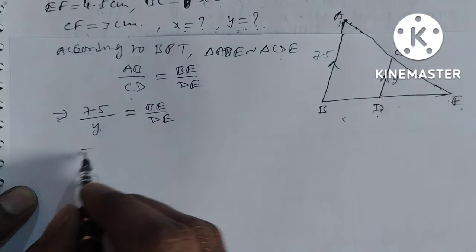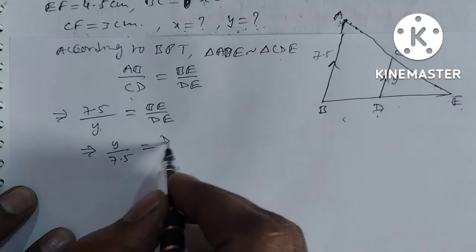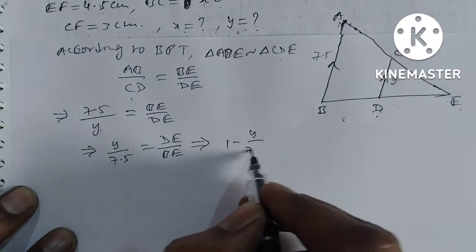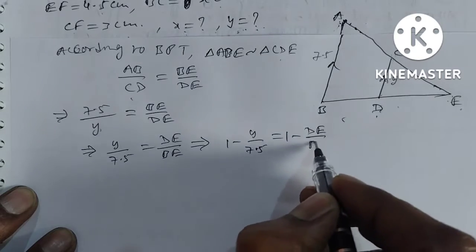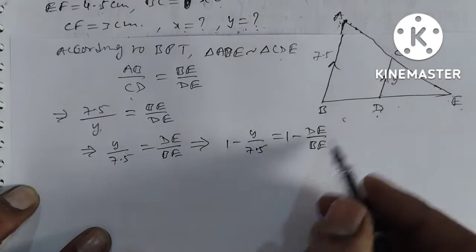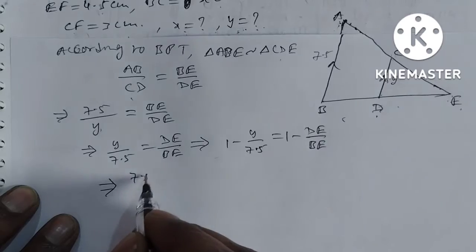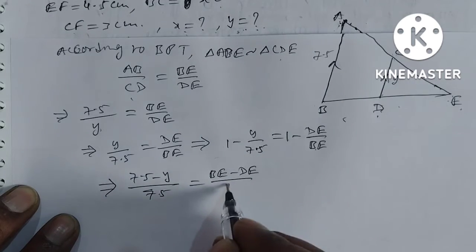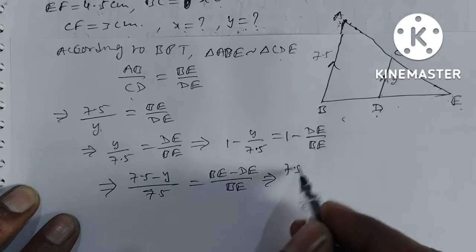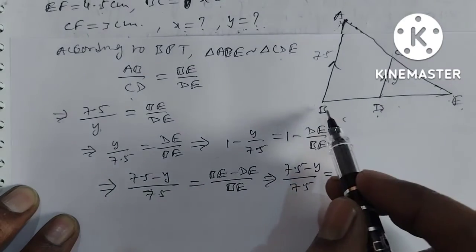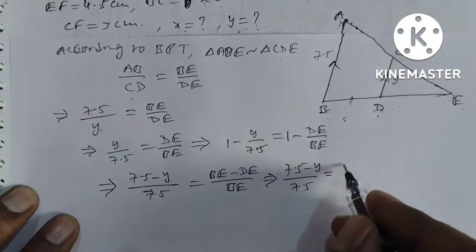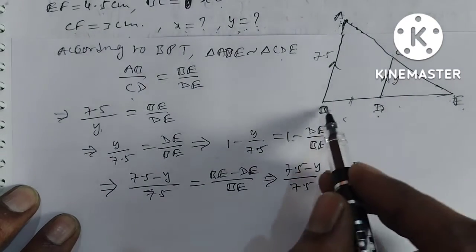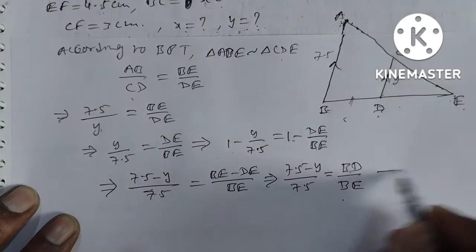AB by CD is equal to 7.5 by Y, and this equals BE by DE. Now reverse this: Y by 7.5 is equal to DE by BE. Subtracting from 1: 1 minus Y by 7.5 is equal to 1 minus DE by BE. This gives us 7.5 minus Y by 7.5 is equal to BE minus DE by BE. Since BE minus DE equals BD, we get 7.5 minus Y by 7.5 is equal to BD by BE. This is equation number 1.